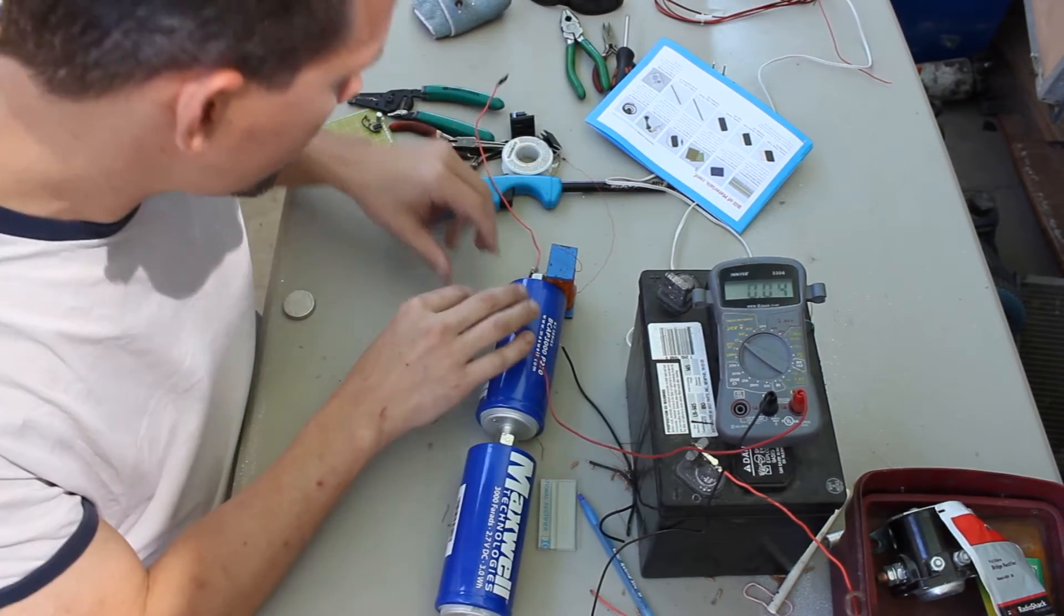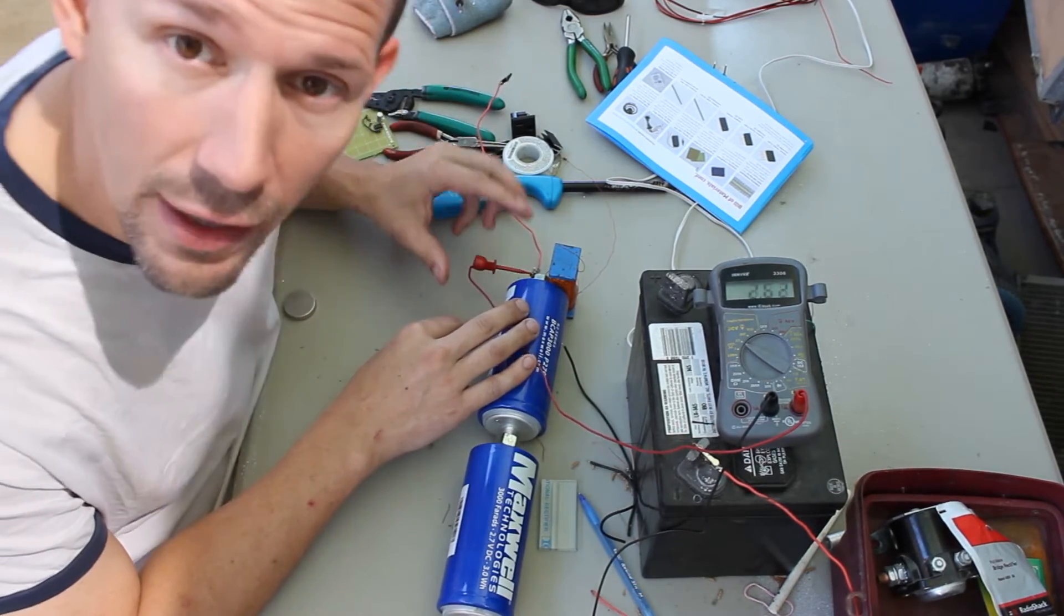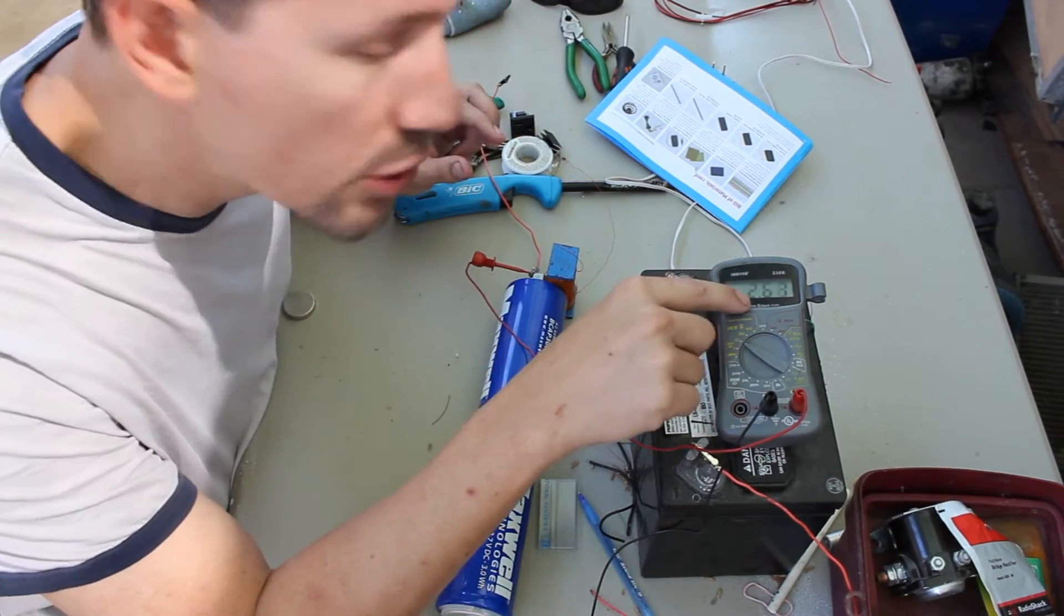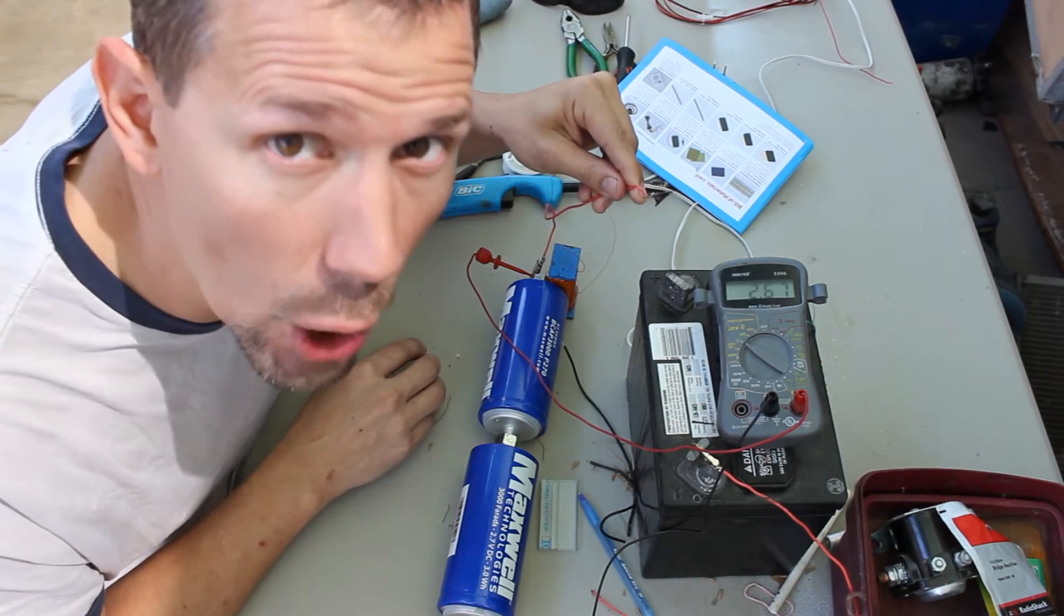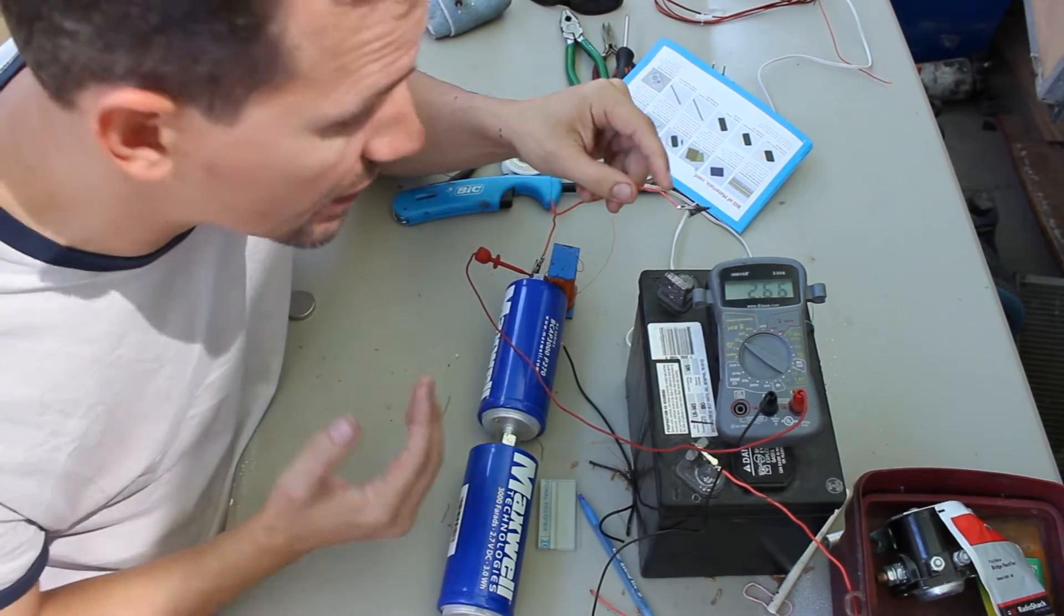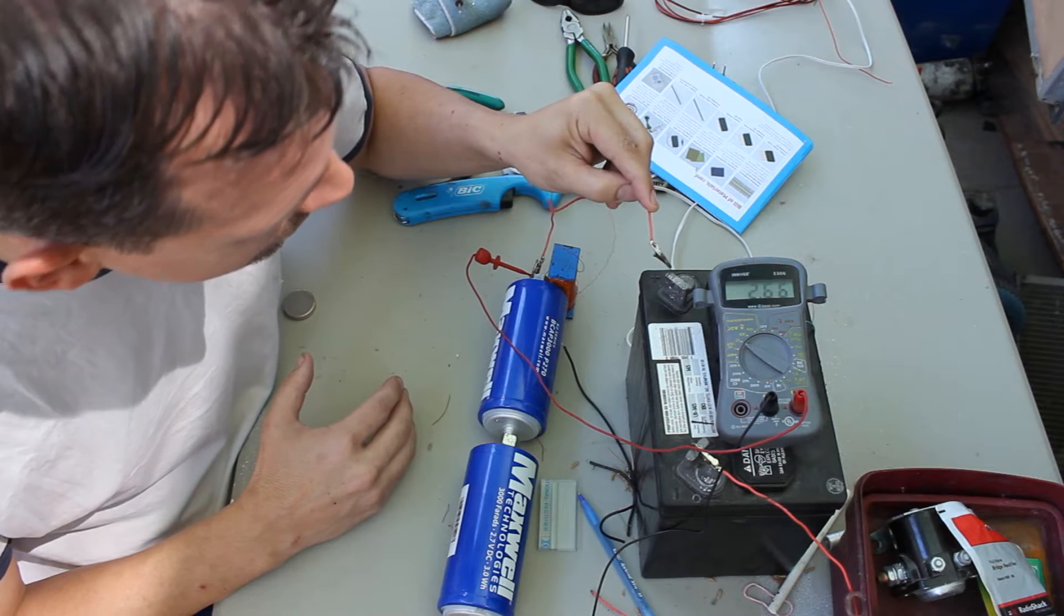And right now they are only charged to 2.66 volts. So when I put this on there, the current will flow very fast because there's no resistance on this. So let's see if I can get some sparks.